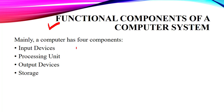As we have discussed earlier, mainly we have four functional components in our computer system. These components are input devices, processing unit, output devices and storage. These input devices are the devices through which we can input the data. This processing device is our CPU, and these output devices are the devices through which we can get the output or see the final result.